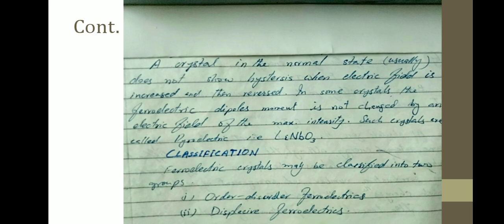A crystal in the normal state usually does not show hysteresis when electric field is increased and then reversed. In some crystals, the ferroelectric dipole moment cannot be changed by an electric field of the maximum density. Such crystals are called pyroelectric. When we apply the electric field, the polarization will get aligned. When we apply in the other direction, the direction will change. In pyroelectric materials, the polarization is in a fixed direction and cannot be reversed.